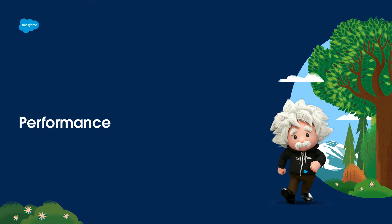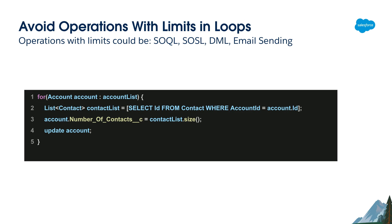Now we will talk about some best practices for performance. Performance is important to make sure that your code, whether it's a Lightning Web Component or an Apex class, runs in a timely manner. The first best practice for performance is to avoid operations with limits inside loops. Operations with limits could be SOQL, DML, sending an email, or basically any operation that has governor limits. We have governor limits in Apex and Salesforce, and we could hit them easily with just 200 accounts.